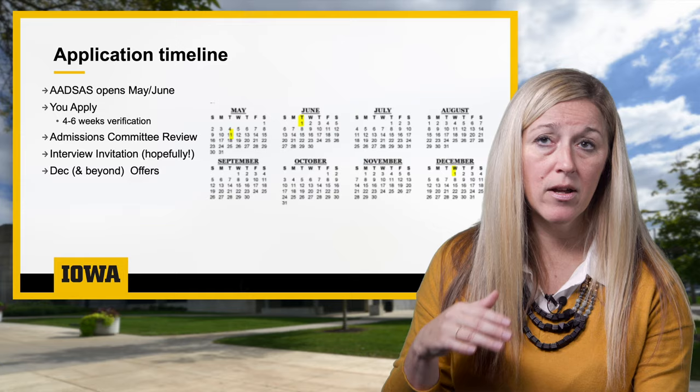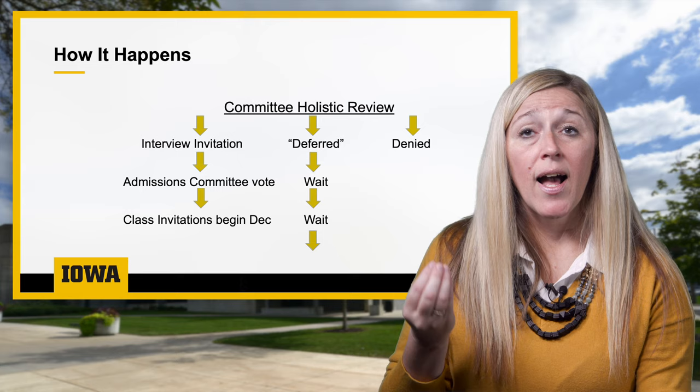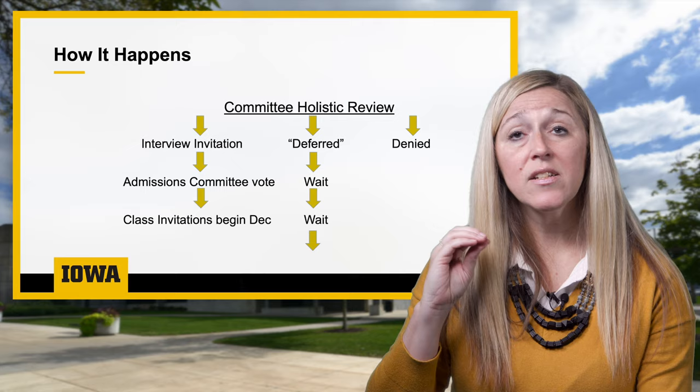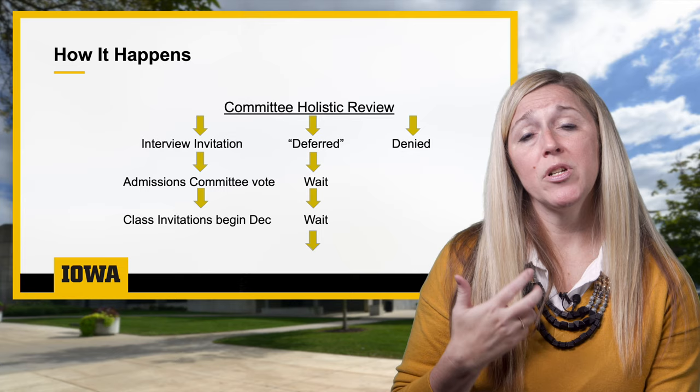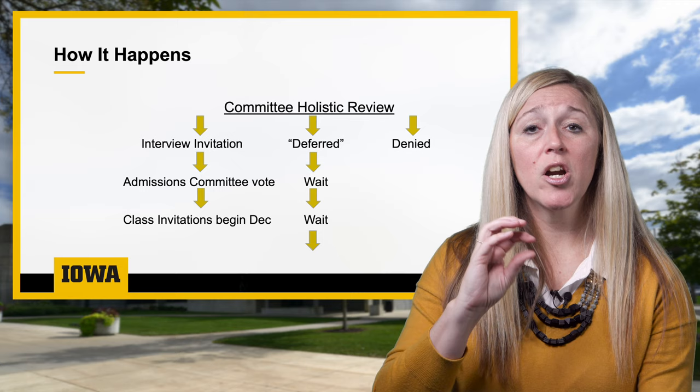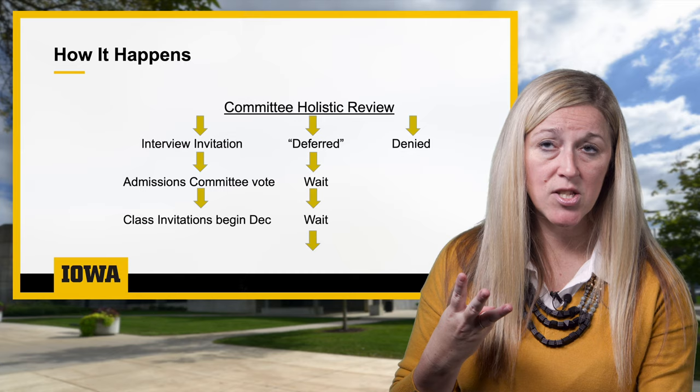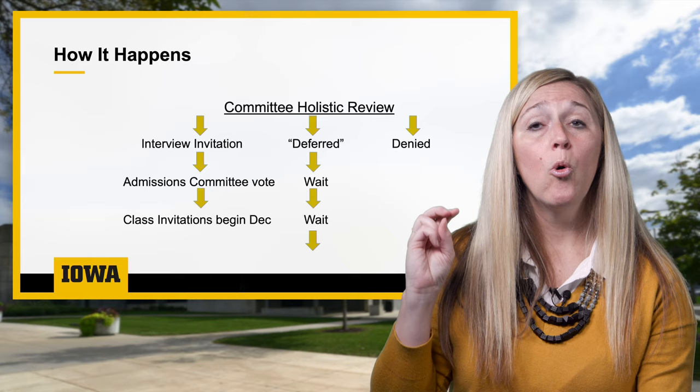At Iowa we utilize a holistic review of our applicants — we look at grades, DAT scores, involvements, volunteer experiences, shadowing, your essay, and letters of evaluation. Our committee will review it, and you'll hear one of three messages: you've been denied and the road stops for that cycle; you've been put on hold, which is also called deferred; or we want to interview you. If you're deferred, check your email faithfully — including spam and junk folders.